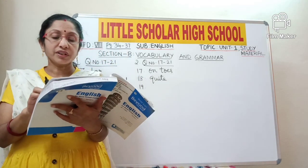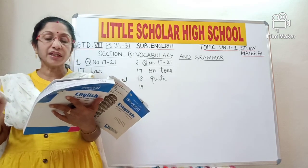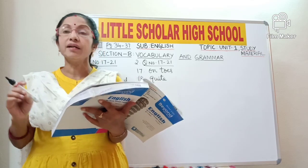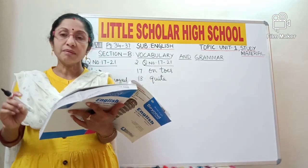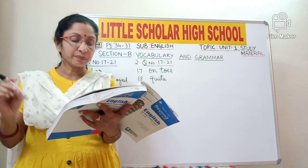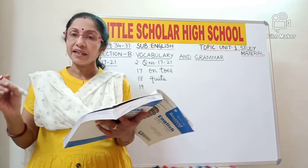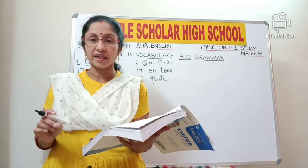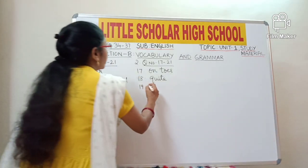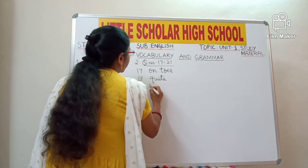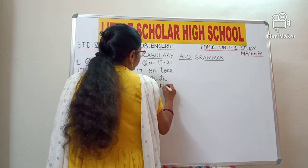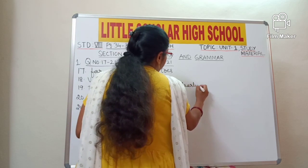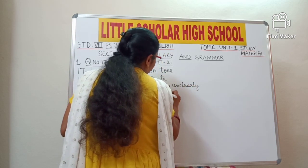Question number 19: 'What are you mumbling over there?' What is the meaning of the underlined word 'mumbling'? Mumbling means speaking unclearly and quietly. The answer for question 19 is 'speaking unclearly and quietly'.